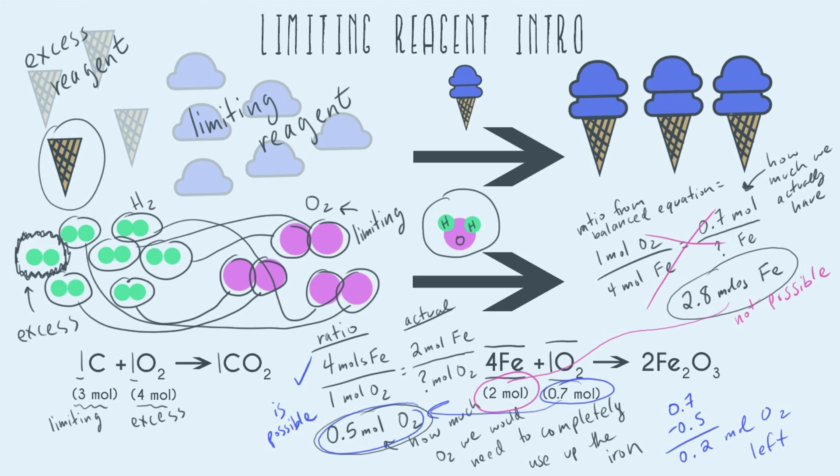So now which one is limiting and which one is excess? Well, O2 is left over. So this is excess. And we calculated this for using up all of the iron. So all the iron is gone. So the iron is your limiting reagent.